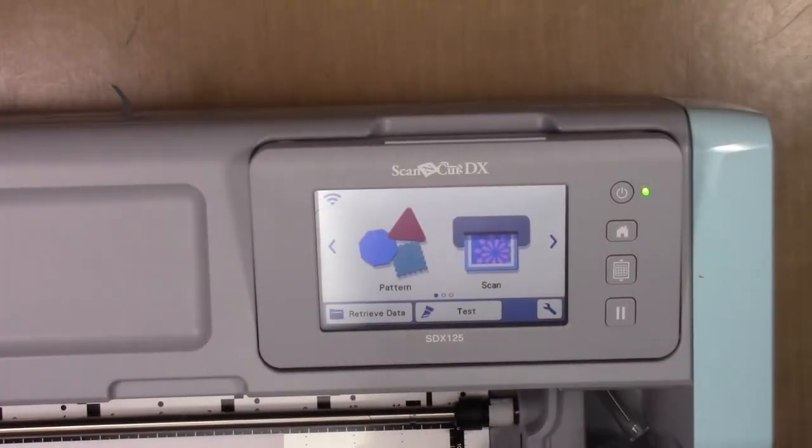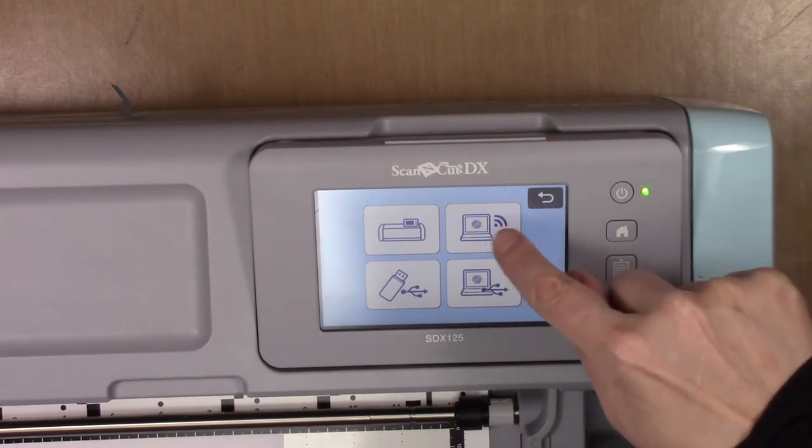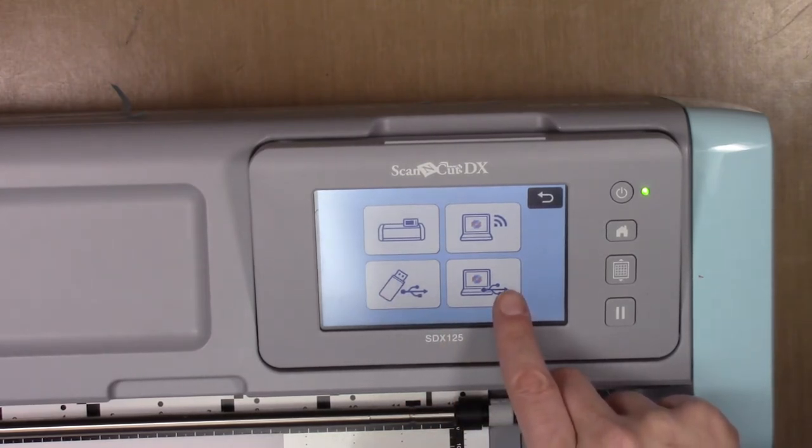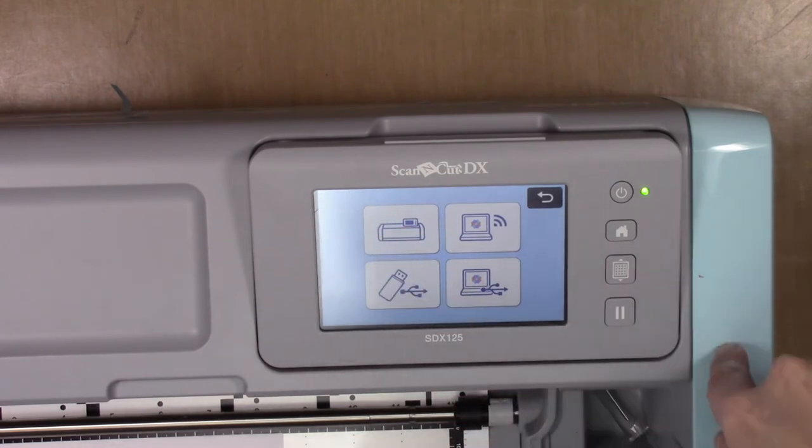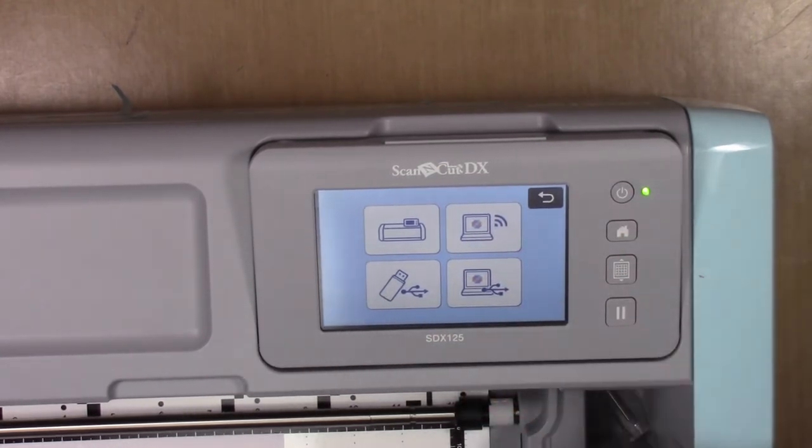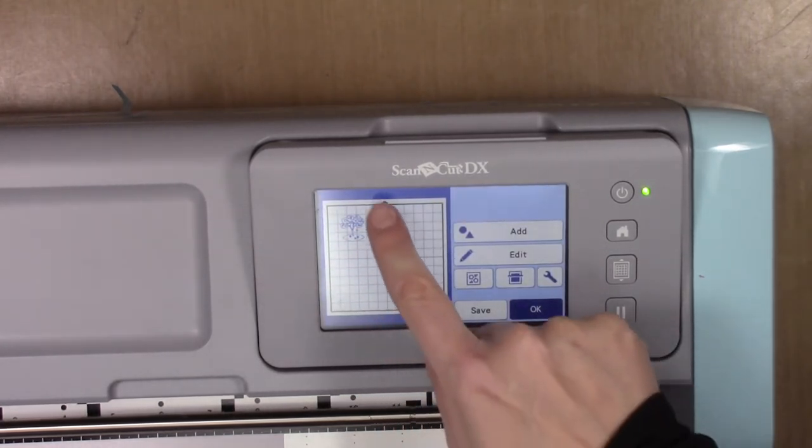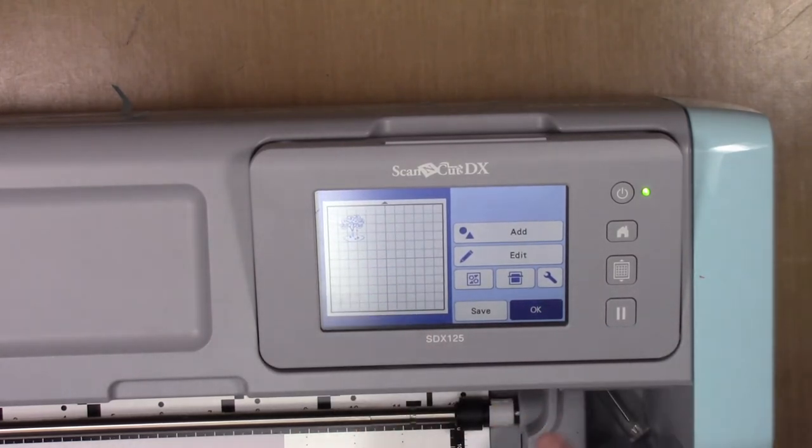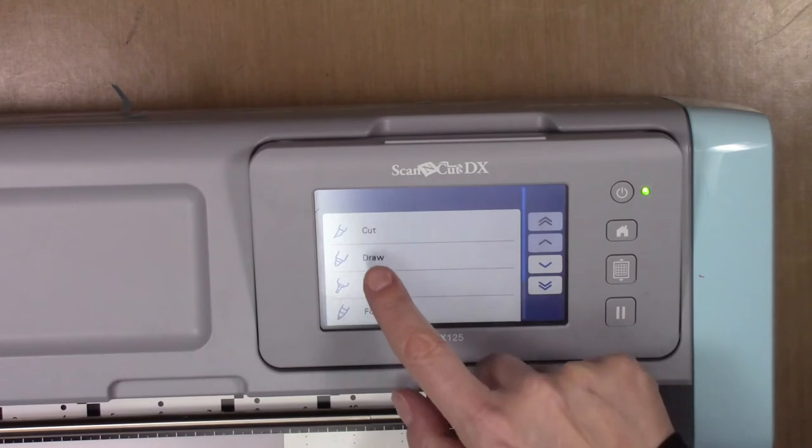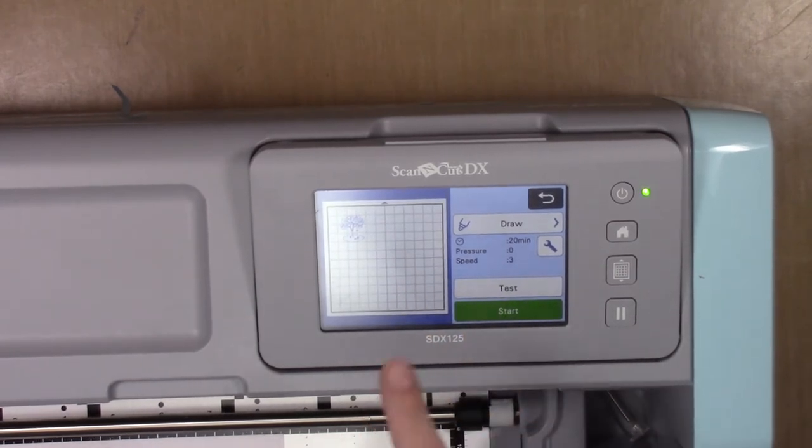I sent the design via the internet, so I'm going to hit Retrieve Data. I'm going to pick the wireless because that's how I did it. The tree is there. I want to draw. Because we set draw before I sent it over here, it lets me do this.